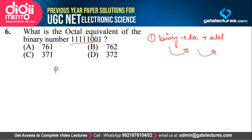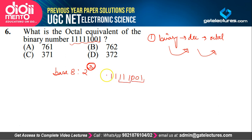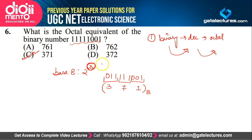Given binary number 11111001: form groups of 3 from LSB — since full grouping isn't possible, append a 0 at the MSB (doesn't affect the value). Groups become: 001 = 1, 111 = 7, 011 = 3. So the octal equivalent is 371, which is option C. Similarly for hexadecimal (base 16 = 2⁴), you form groups of 4 bits from LSB.